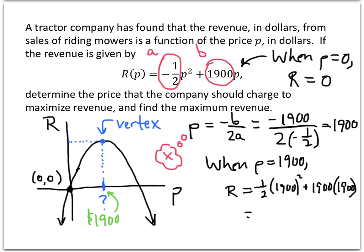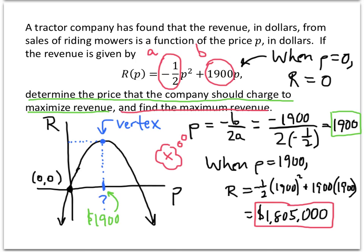And when we throw that on our calculators and work that all out, it works out to be $1,805,000. So here are the two answers to our questions. Our questions were what price should the company charge to maximize revenue? The answer to that question is $1,900. That's this answer right here.